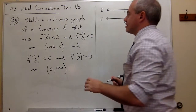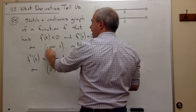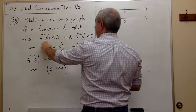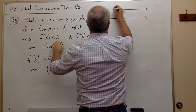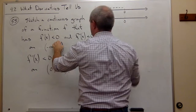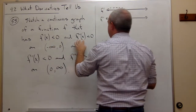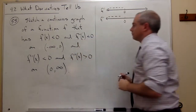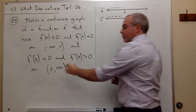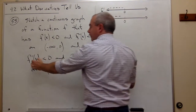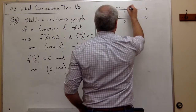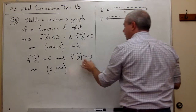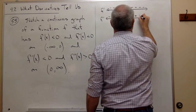Between negative infinity and zero, the first derivative is negative, so I'm going to put some negatives in here. And the second derivative is also negative, so I'm going to put some negatives in here. From zero to infinity, the first derivative is negative, so I'm going to put some negatives in here. And the second derivative is positive, so I'm going to put some positives in here.